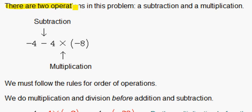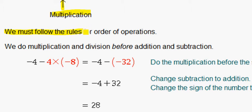There are two operations in this problem, a subtraction and multiplication. Our subtraction is here and the multiplication is here. We must follow the rules for order of operations. We do multiplication and division before addition and subtraction.